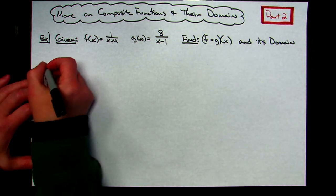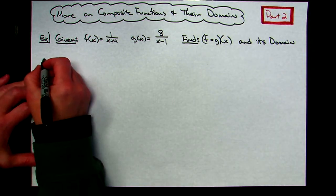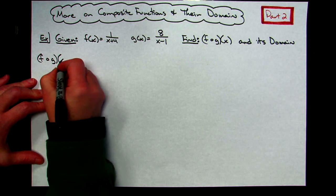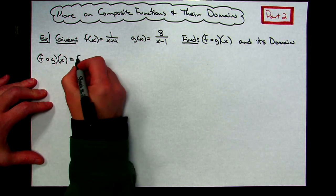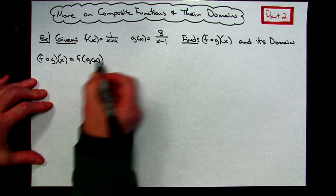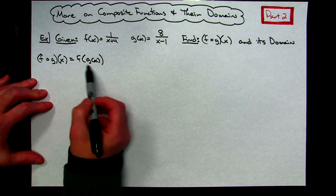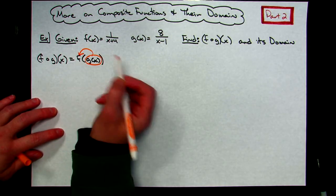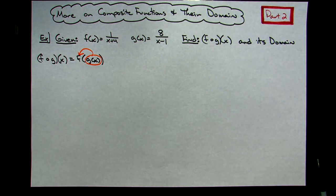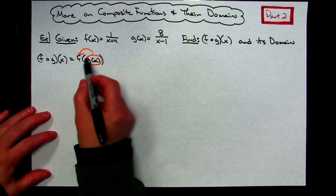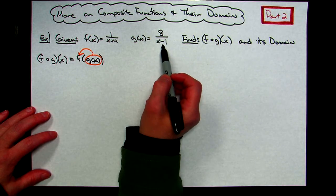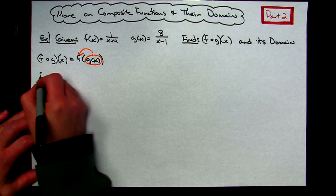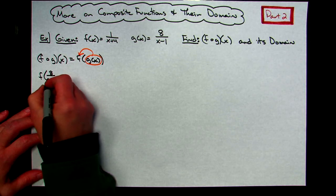Let's find the composite function first. If you've been working with composite functions, hopefully you recall that the composite function can be written as f of g of x. That notation clearly tells me that I'm going to take g of x and put it inside my f function. My g function is 8 over x minus 1, so I'm going to take it and put it in my f function. So f of 8 over x minus 1.